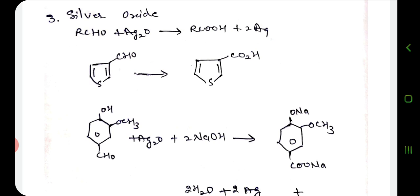Silver oxide also acts as a strong oxidizing agent. Silver oxide is used to avoid acidic conditions. This method is used to estimate aldehydes by titrating the acids produced. The acid that is formed is titrated and used for estimation.